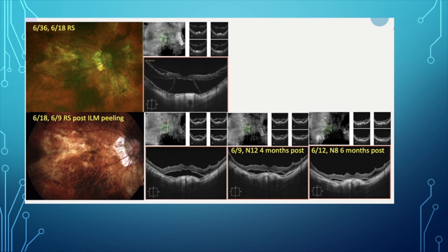In this case, there was no macular detachment — only foveal detachment with schisis in the outer nuclear, inner nuclear, and nerve fiber layers. With wide ILM peeling sparing the fovea, a reasonable outcome was achieved, though not all cases will have this result.